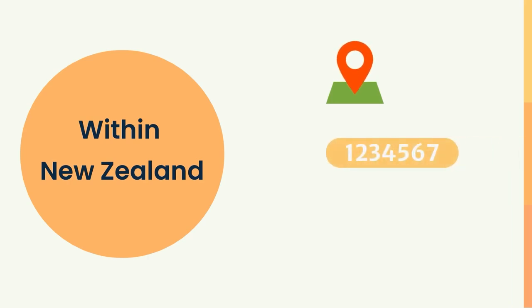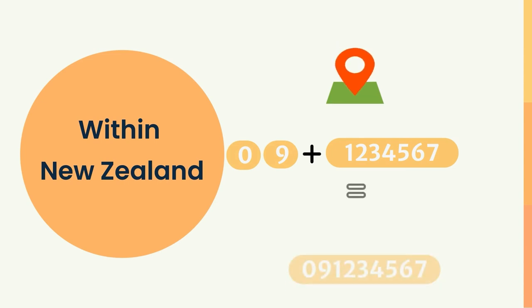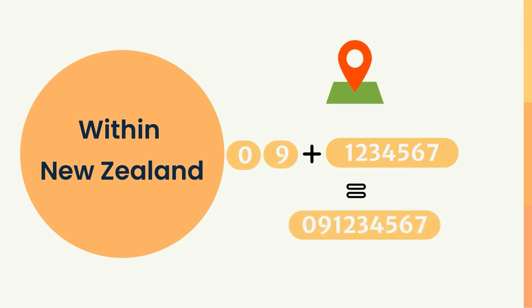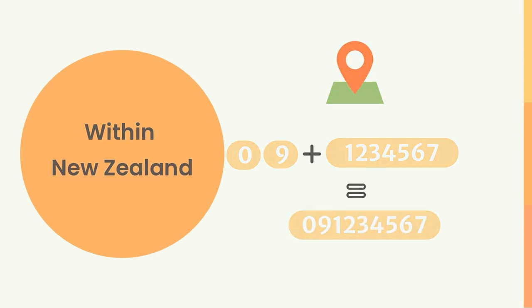For example, dial 1234567 for a local call within the same area code. For calls to a different area code, dial the area code including the leading 0, followed by the local number. For example: 09-1234567.